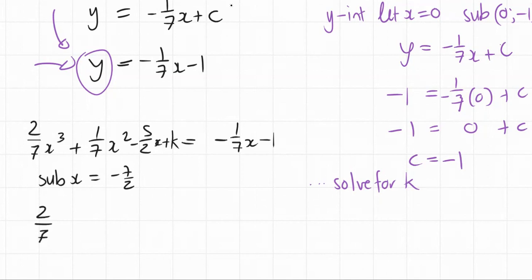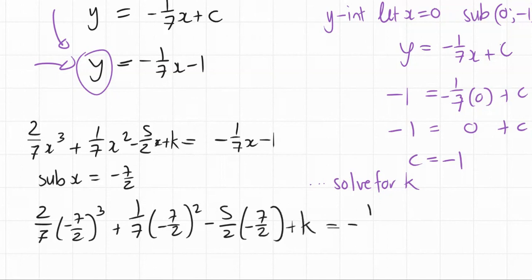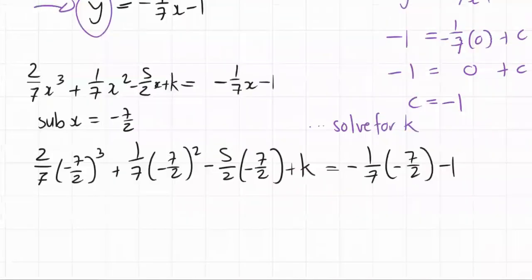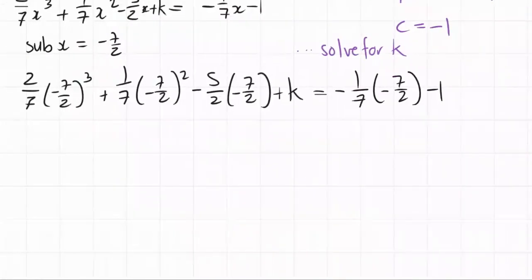So 2 over 7, every time you see an x, you put a negative seven over two. One over seven, negative seven over two squared, plus... this was minus... five over two, negative seven over two plus k, all equal to negative one over seven, negative seven over two minus one. So subbed in my value at point A that was given from a previous question.